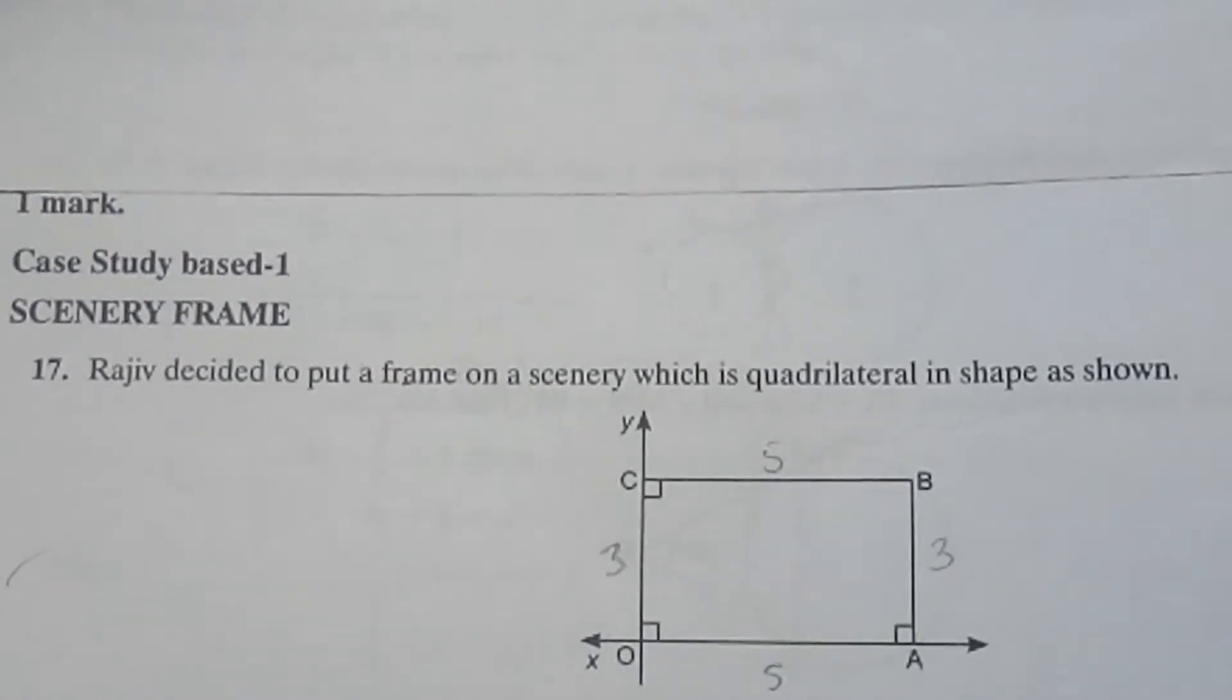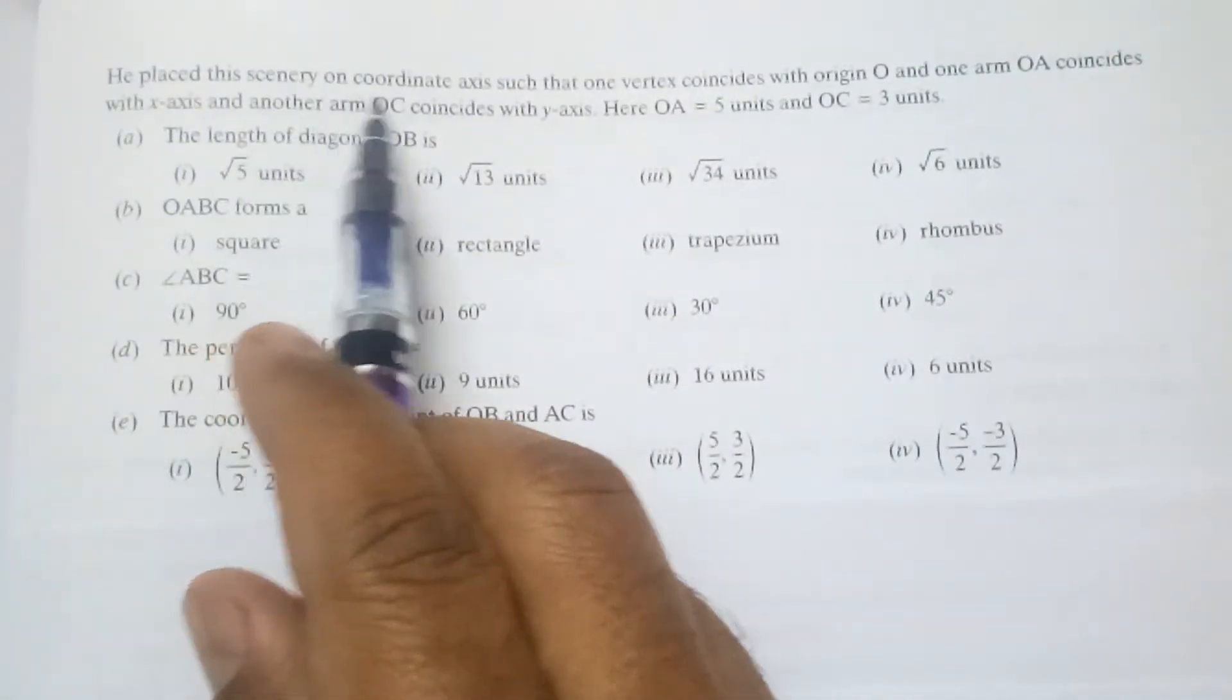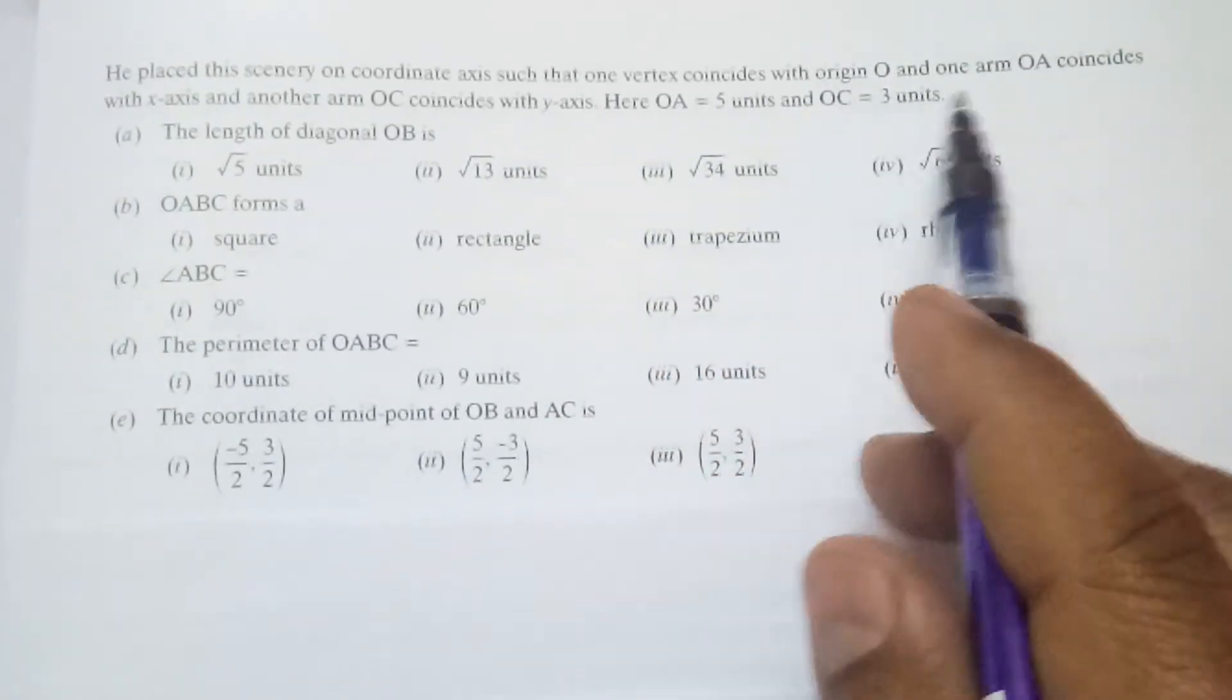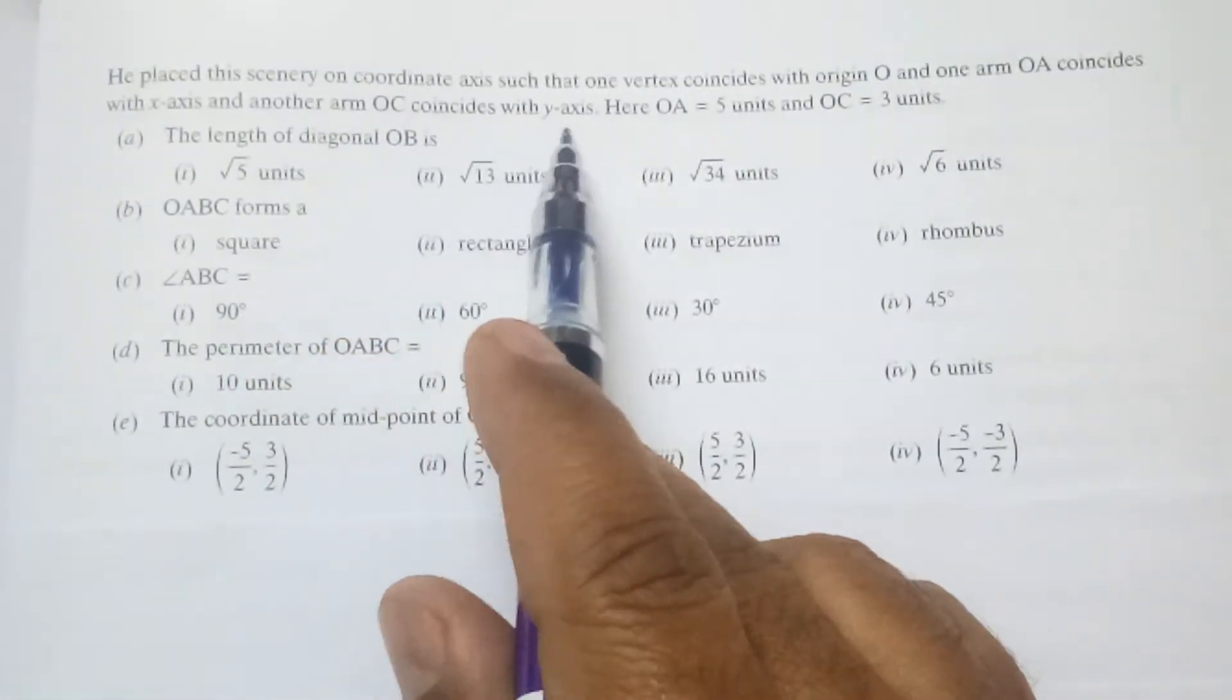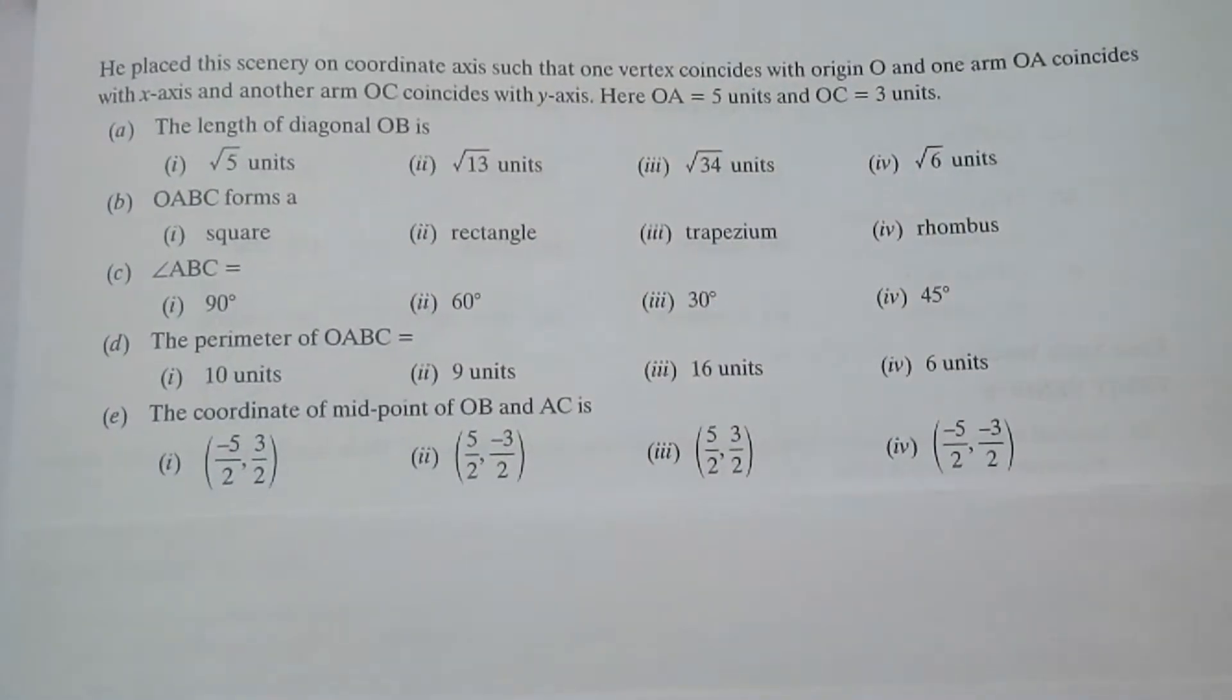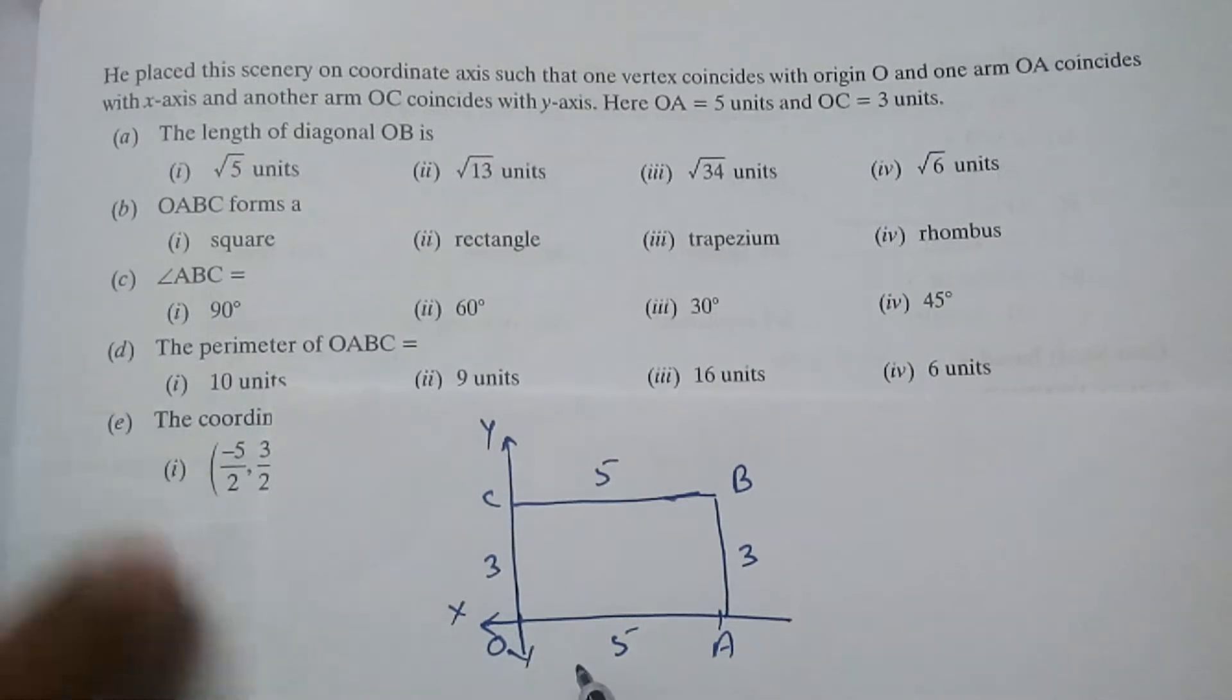Now there are some questions. Let us discuss these questions one by one. Now, condition is given. He places the scenery on coordinate axis such that one vertex coincides with origin as I discussed. And one arm OA coincides with X axis and another arm OC coincides with Y axis. OA is 5 units and OC is 3 units. So as I said, it is given that one side coincides with X axis and second side coincides with Y axis.